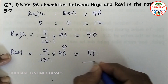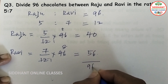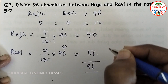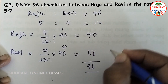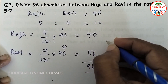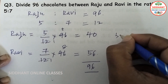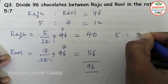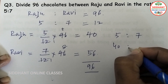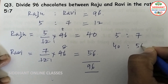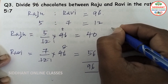Checking: 40 plus 56 equals 96, which confirms the total. So Raju gets 40 chocolates and Ravi gets 56 chocolates in the ratio 5 is to 7.